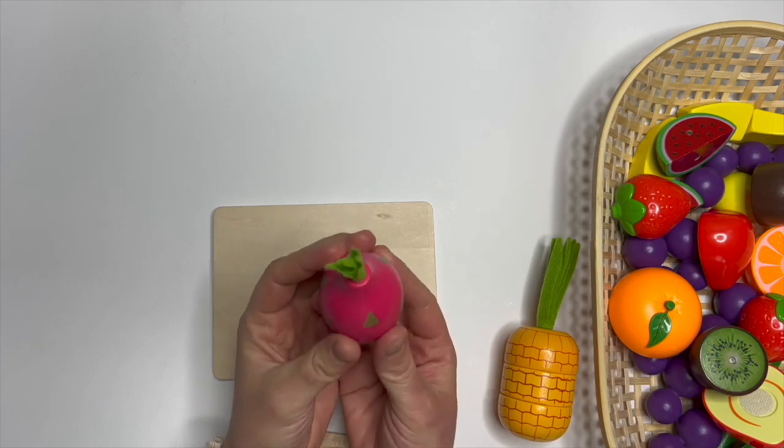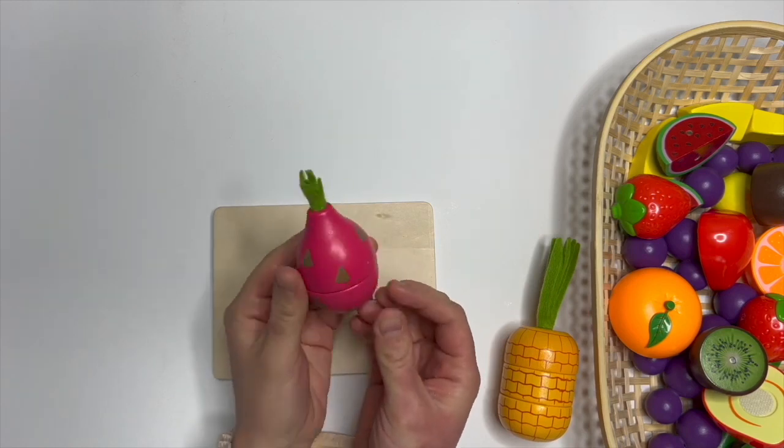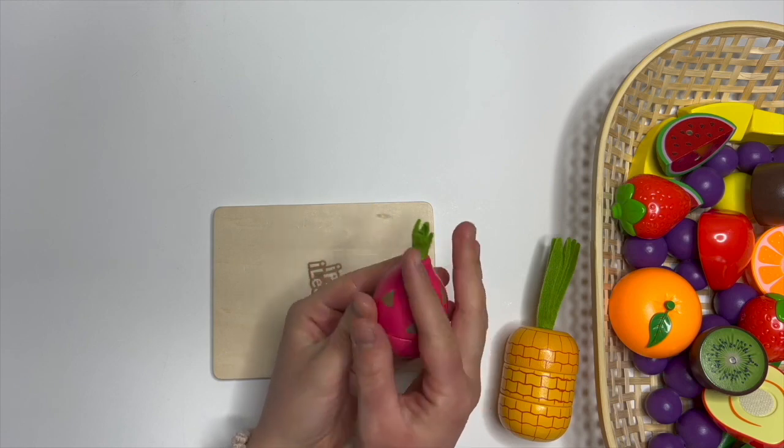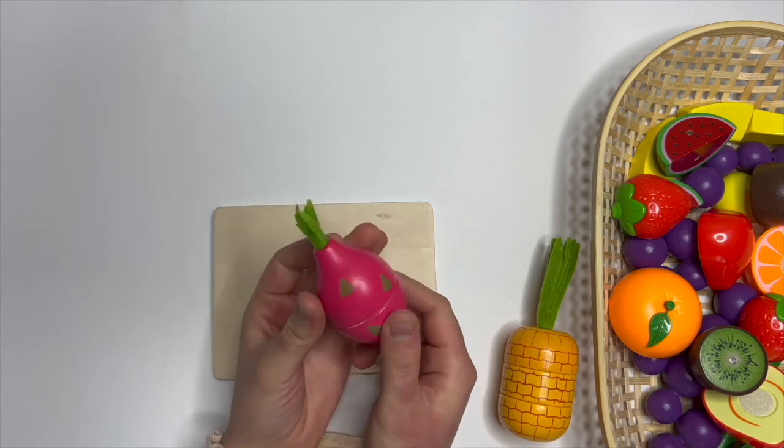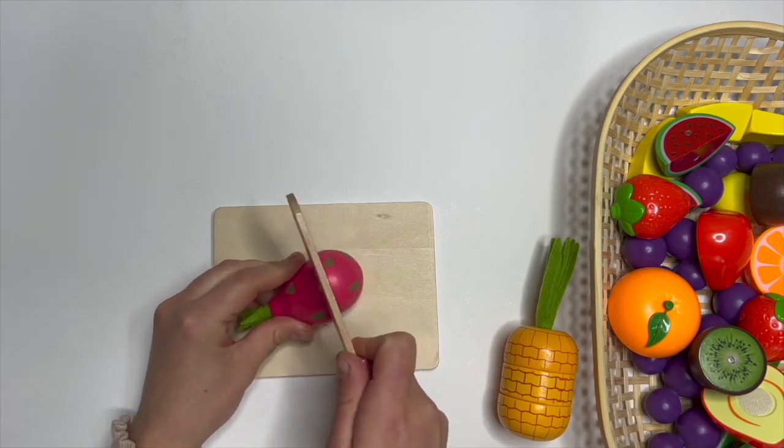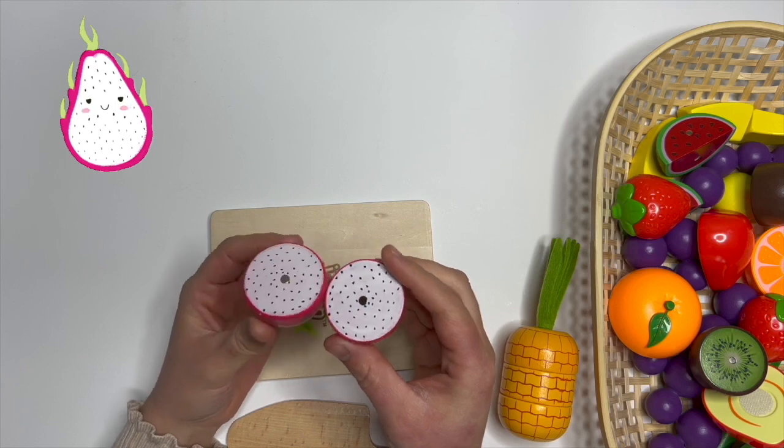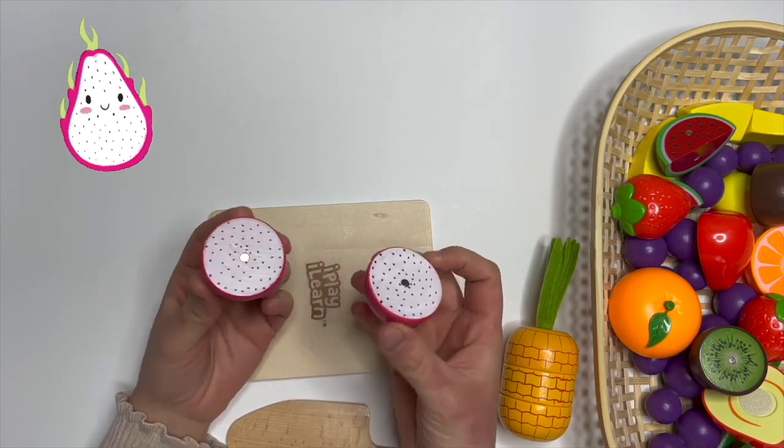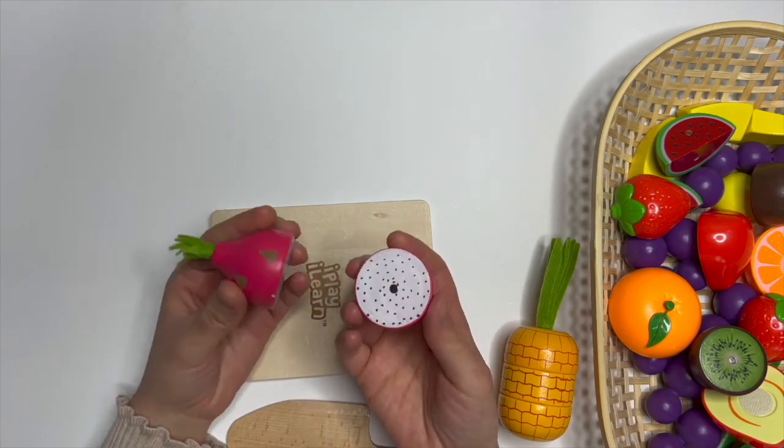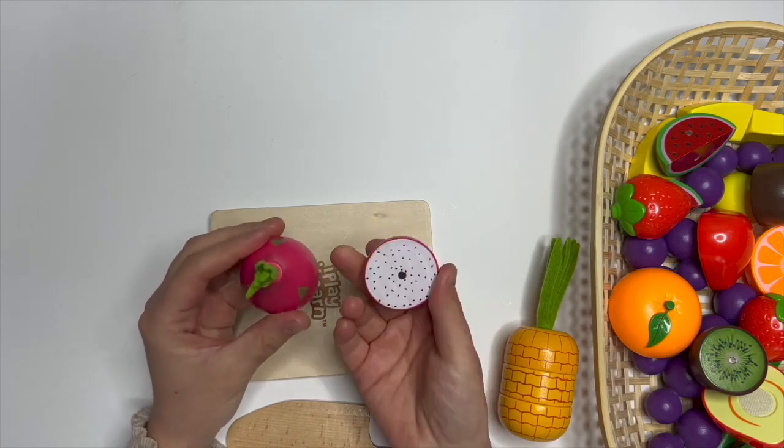This fruit is a funny looking fruit. It's called dragon fruit. It's pink in the outside. And when we open it, look, it's white with black seeds. Dragon fruit has a lot of vitamin C. It makes us feel full and refreshed.